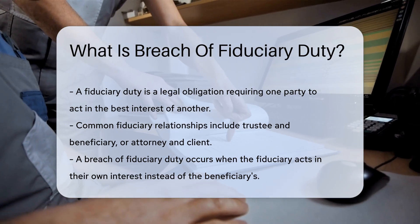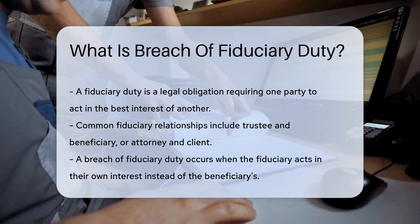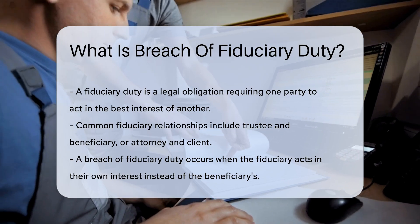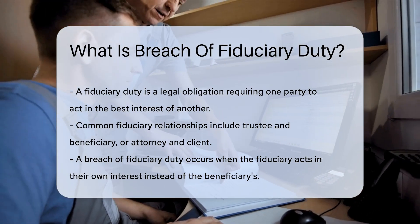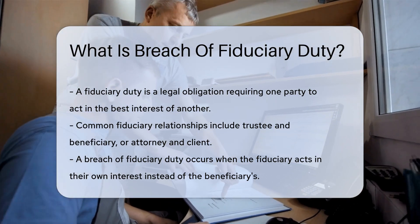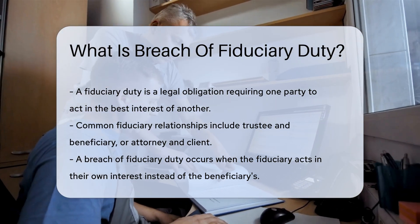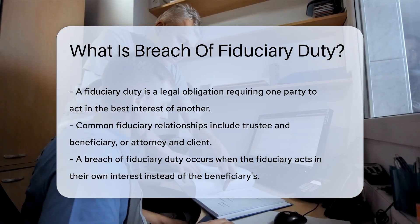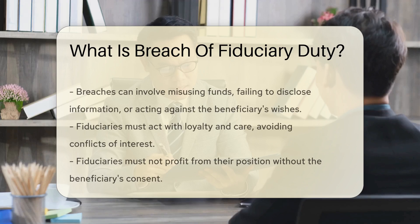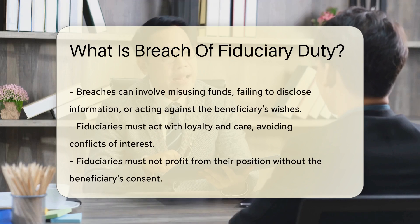A breach occurs when the fiduciary acts in their own interest instead of the beneficiary's. This can involve misusing funds, failing to disclose information, or acting against the beneficiary's wishes.